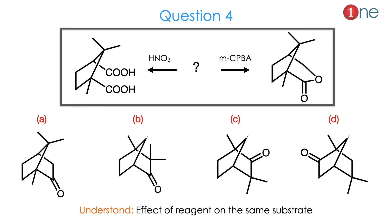Then in question number 4, they ask you to guess the starting material. One product uses nitric acid to open the bicyclic system to give a dicarboxylic acid; the other gives a cyclic ester (lactone) in the same bicyclic system. The reagents differ mainly in the carbonyl group difference. You have to understand the effect of each reagent on the same substrate, and from that guess the starting material.